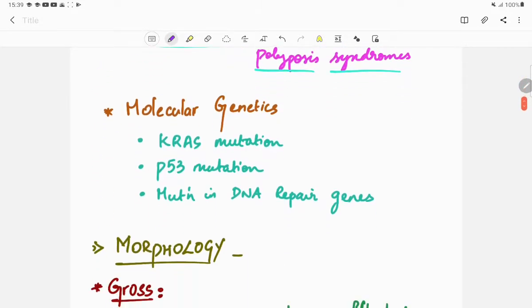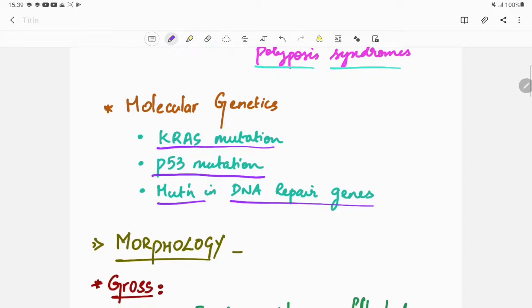Next is the molecular genetics, which include K-ras mutation, p53 mutation which is a tumor suppressor gene, and mutation in DNA repair genes. All these can also cause gallbladder carcinoma.